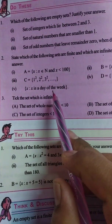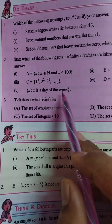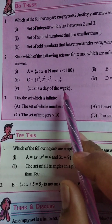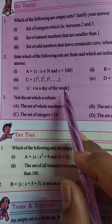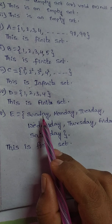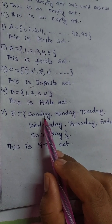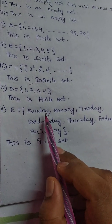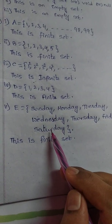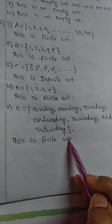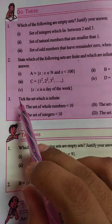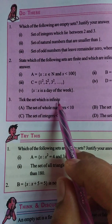Fifth one: the set of days of the week. In a week there are seven days — Sunday, Monday, Tuesday, Wednesday, Thursday, Friday, Saturday. We can count them, so it is also a finite set.